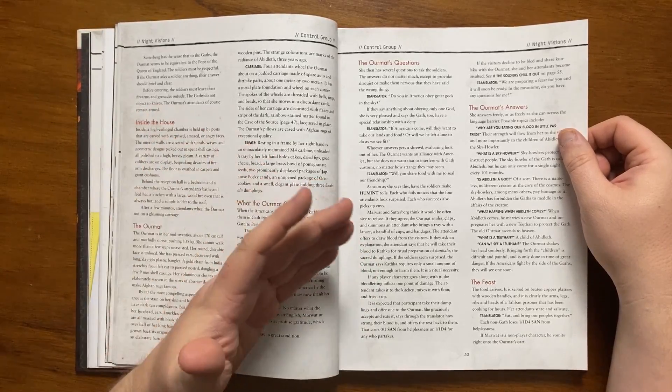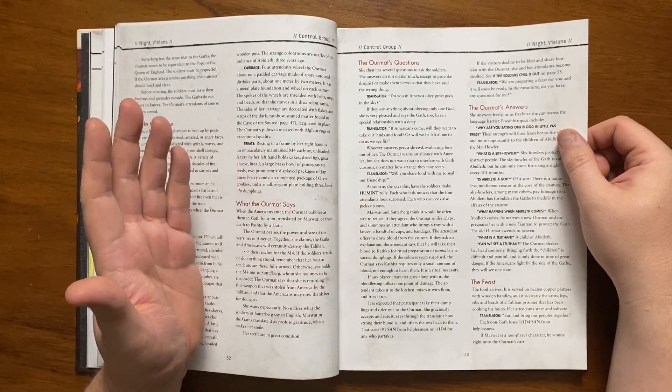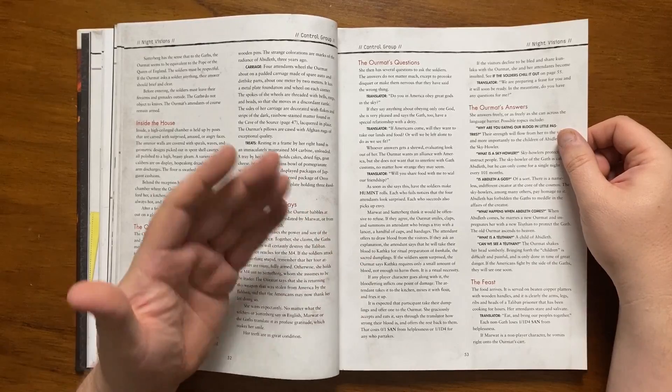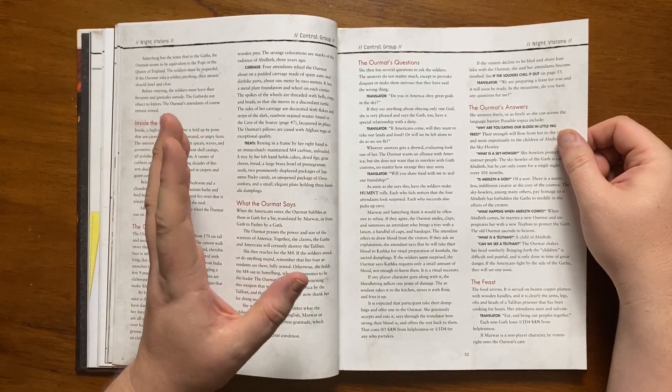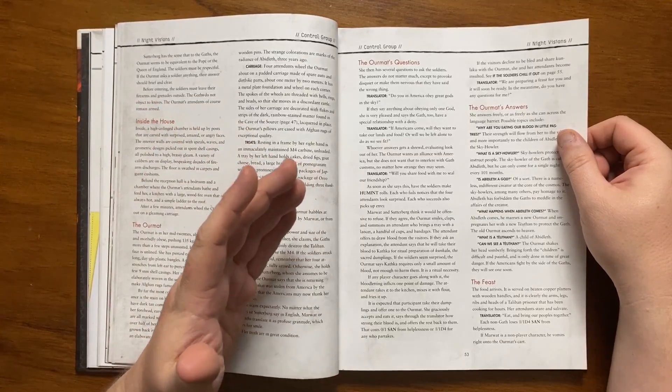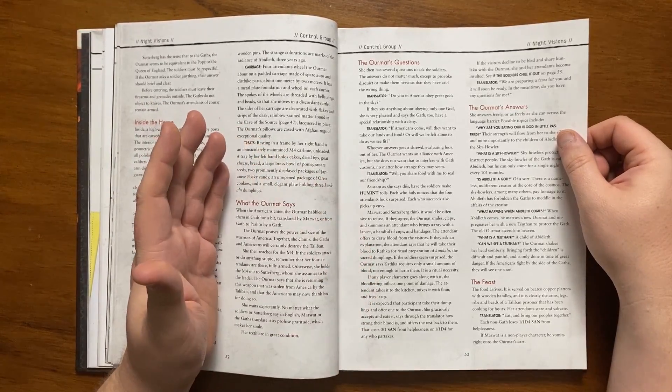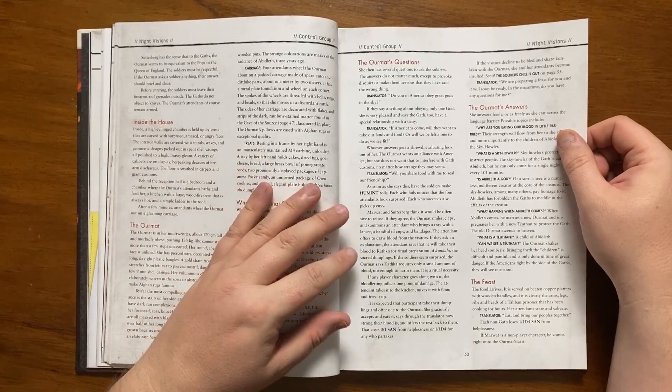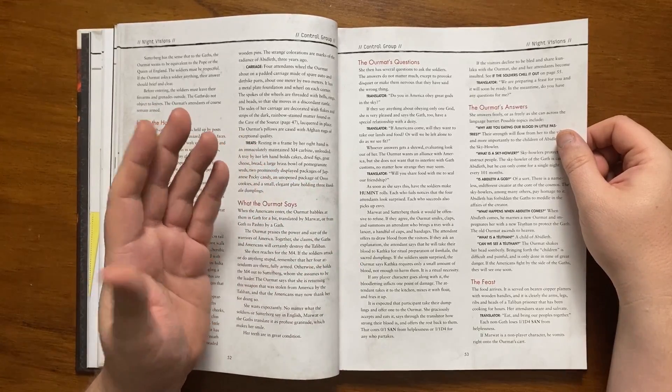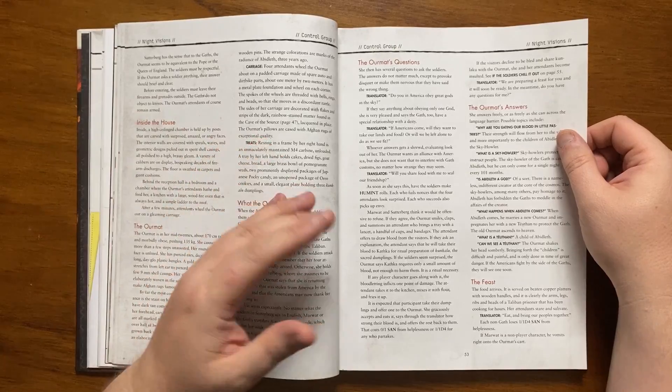She will then ask if they will share food with her to seal the friendship. Marwat and Sutterberg insist that it would be offensive if they refuse and if they agree the Ormat claps her hands smiling and an attendant will bring a tray with a lancet, some bandages and cups and proceed to take blood from all of the visitors. This it will be explained will be used to make the kunkalu. They will be taken away and made into dumplings. It is expected that the visitors take part. The Ormat will eat one and comment on how strong their blood tastes and this can cause a minor amount of sand loss.